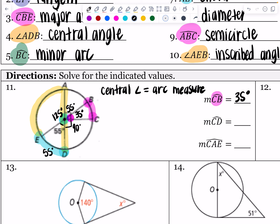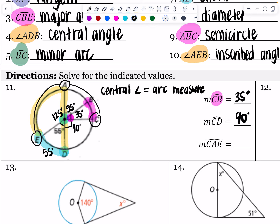What is arc CD? That's going to be 90 degrees because that angle is also 90. And then what is arc CAE? Starting at C, going through A first and then stopping at E — I'm going to add together 35 plus 55 plus 125, and when I do that I get 215 degrees. It makes sense because that's a major arc and it measures more than 180.